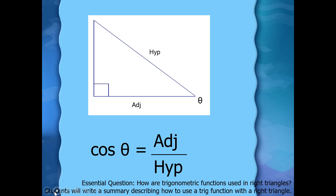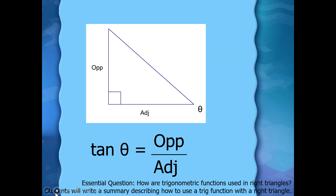Cosine — this should be on the second triangle, all above the dashed line. Label your hypotenuse and your adjacent, which is next to your reference. Cosine is the adjacent over the hypotenuse. The third one, which should be familiar, is tangent. Tangent is the opposite over the adjacent. So label your opposite leg, label your adjacent leg, and tangent of theta equals opposite over adjacent. Is this familiar? A little bit.